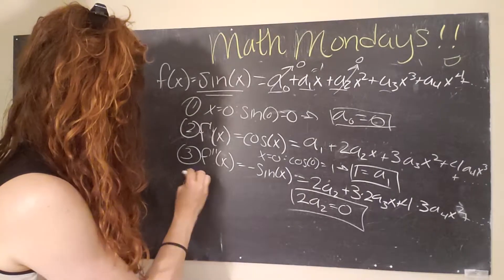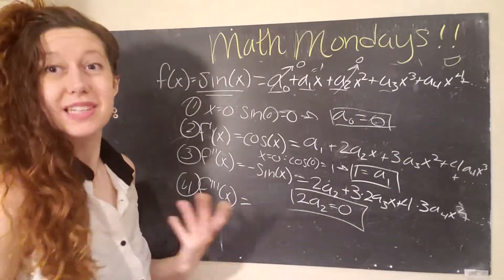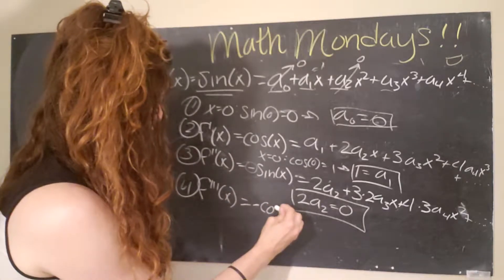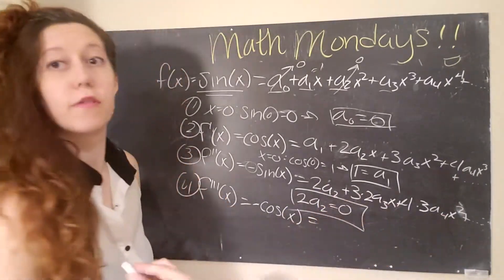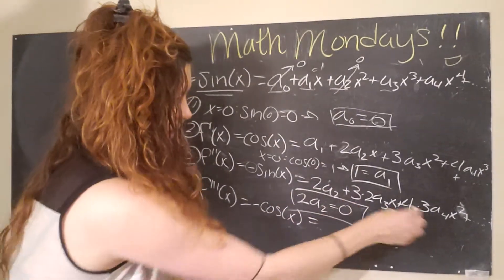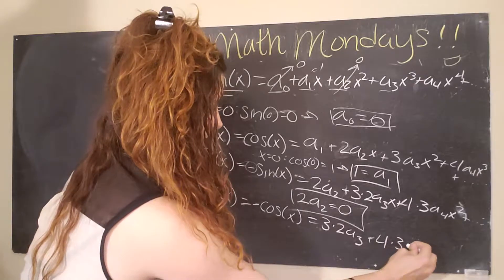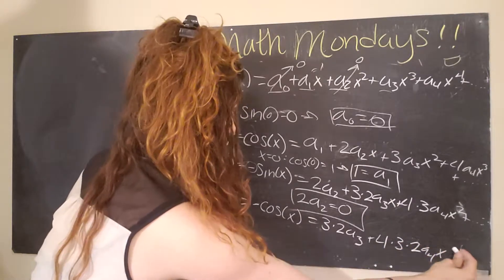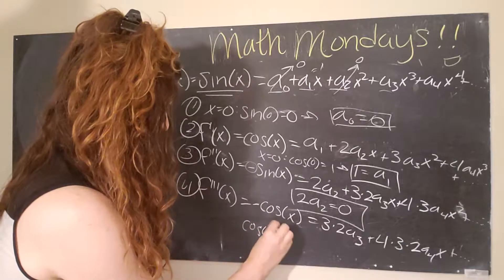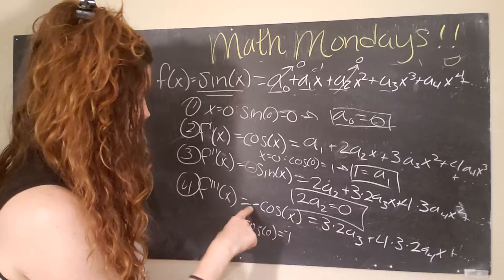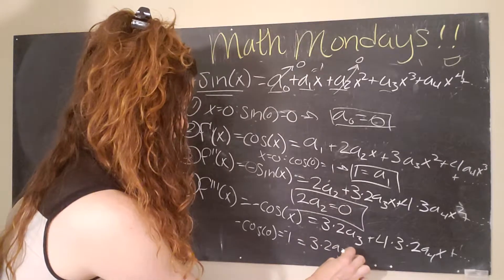A zero and a two went to zero. So we're going to do it again. So f triple prime of x, or this is the third derivative that we're taking. The derivative of sine of x is cosine, but we have this minus sign here. So we will bring that along. Cosine of x. Okay, so now we take the derivative of the right side, this term goes zero because the derivative of a constant is zero. And we get three times two a three plus four times three times two a four x, just x plus dot dot dot. Okay, and the last condition I'll apply.